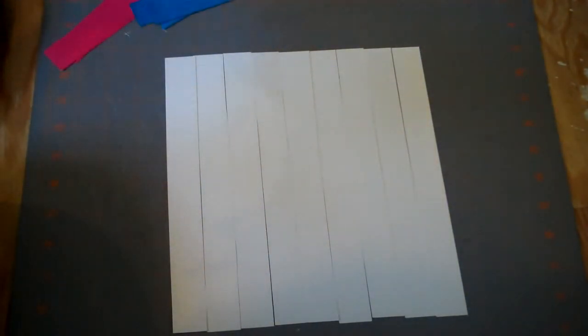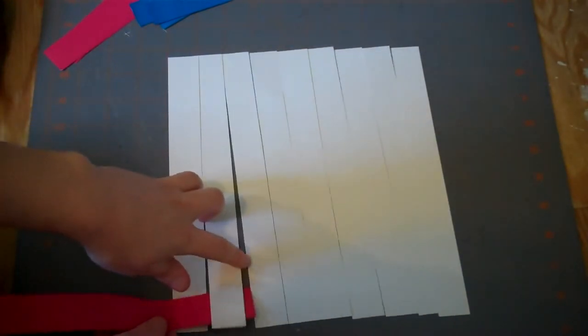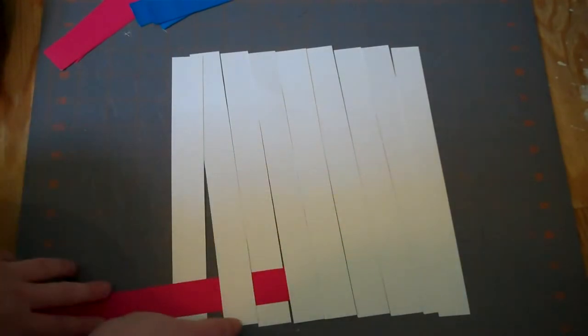Then take one of your red or blue strips and weave it through the strips of white going over and under, over and under, all the way across. You want to leave a little bit on the edge here, that half inch that hangs over the lip of your tray.